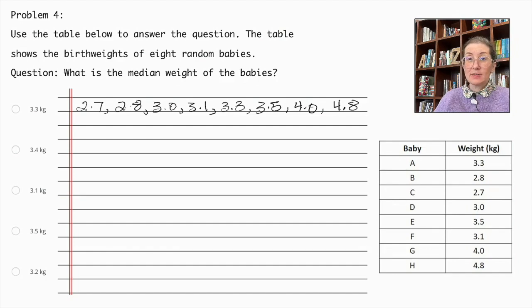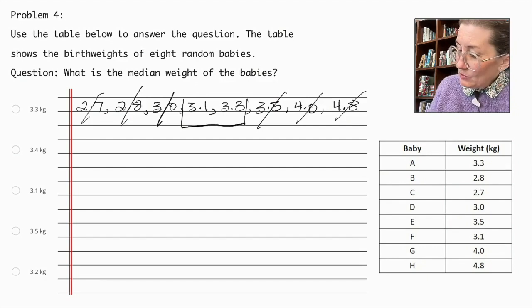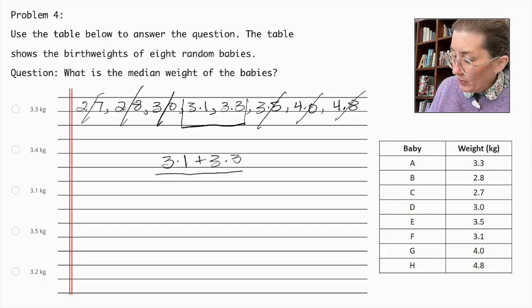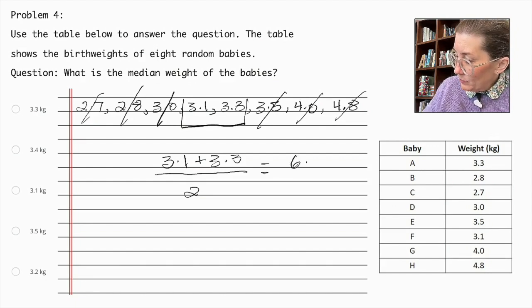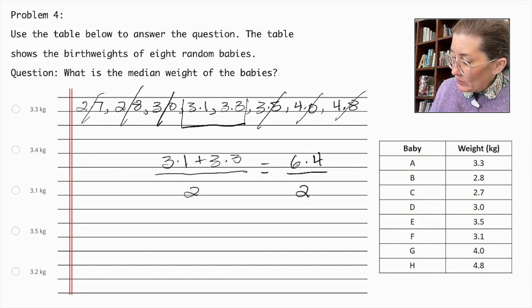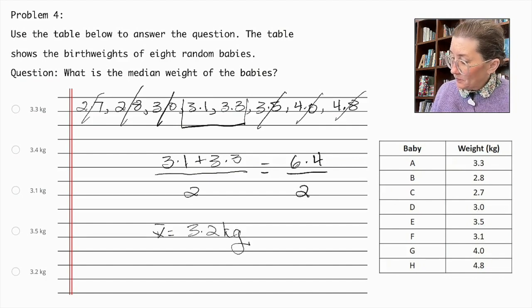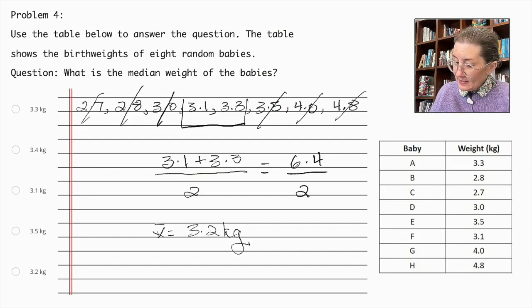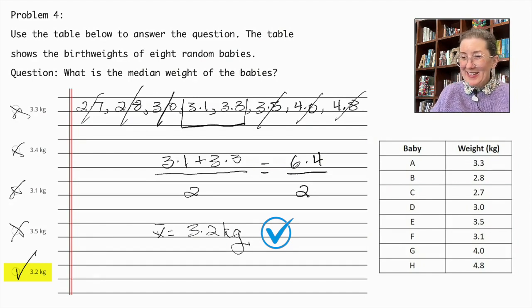The lowest is 2.7 and the highest is 4.8. So, we need to find the middle number of this set. We can cross them out to find that. And because our set is even, we have two numbers. So, now we have to find the mean of these two numbers in order to find the actual answer. We've got 2 in this. That's 3.1 plus 3.3 over 2. So, that is equal to 6.4 over 2, which is equal to 3.2 kilograms. So, is that in our number set? Yes, it is. So, 3.2 kilograms is the correct number here.